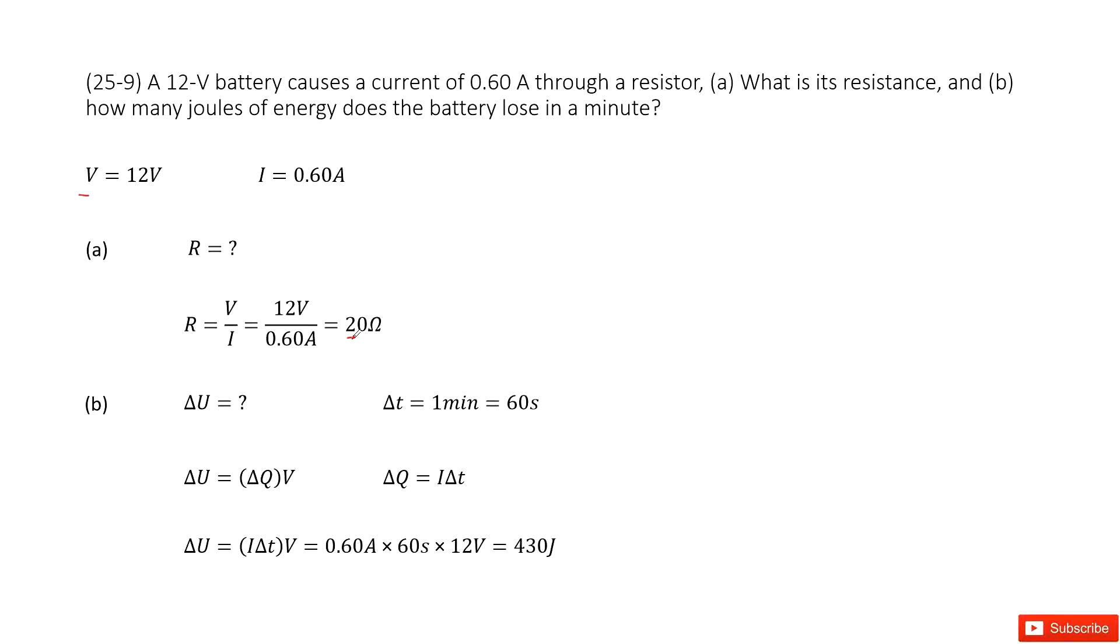The next one, we need to find the energy the battery loses in a minute. So we write down the known quantity: delta t equals 1 minute. This is 60 seconds.